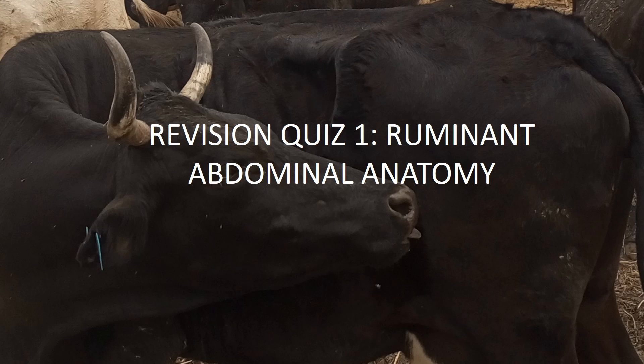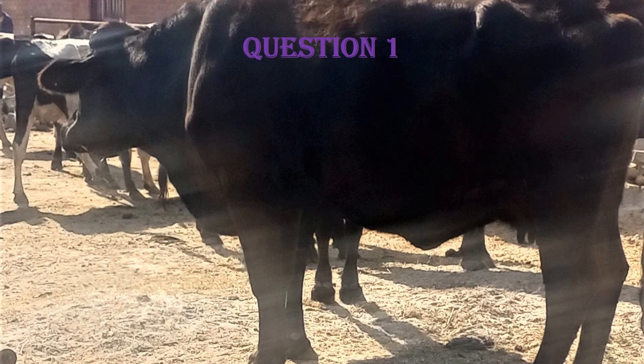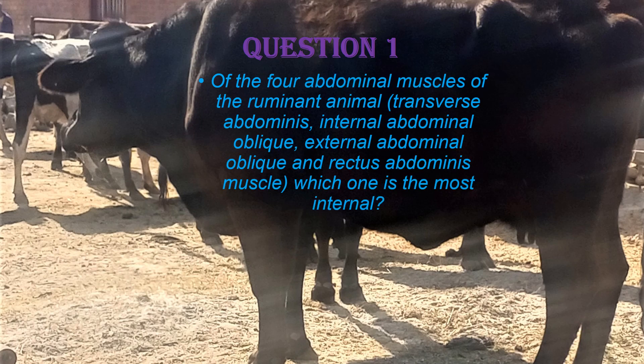Hello. In this video I have provided some quick questions and answers on the ruminant abdominal anatomy. This will help you to revise your understanding of the anatomy of the ruminant abdomen. Question 1: Of the four abdominal muscles — the transverse abdominis, internal abdominal oblique, external abdominal oblique, and rectus abdominis — which one is the most internal? The answer is the transverse abdominis muscle. The most external is the external abdominal oblique, followed by the internal abdominal oblique, then ventrally the rectus abdominis, and finally the most internal is the transverse abdominis muscle.